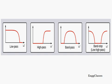Next, let me take an example of a high pass filter. A high pass filter is the one which allows the high frequencies to pass through and thereby filters out the low frequencies.